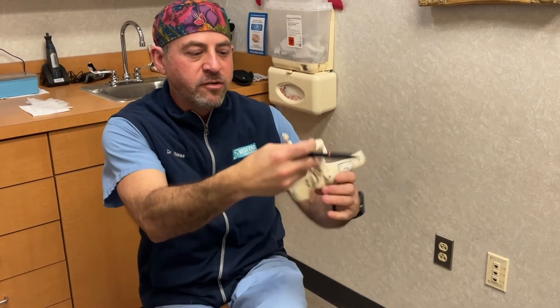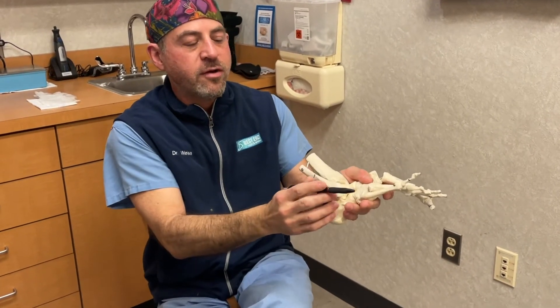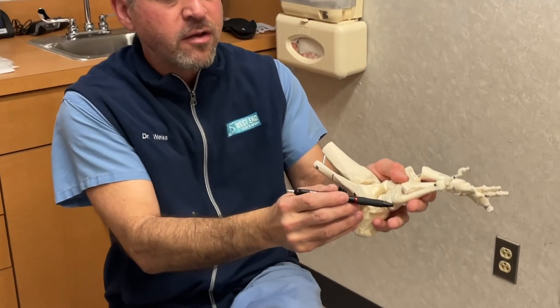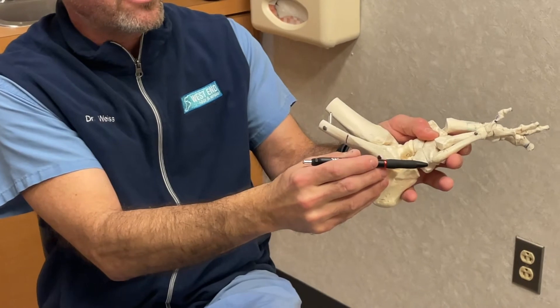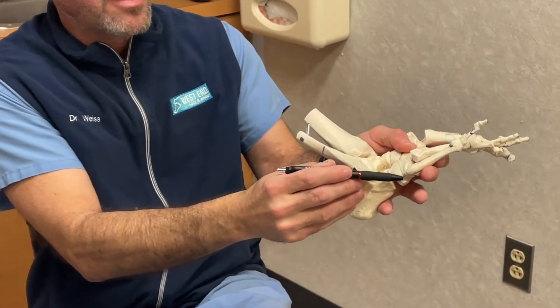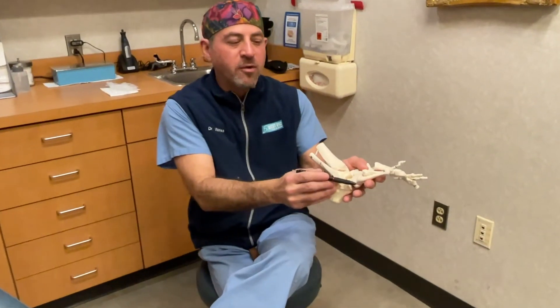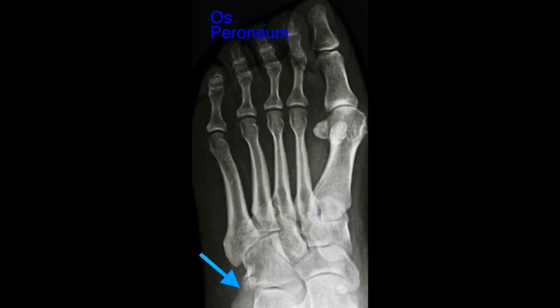The other one is on the other side. For patients who have pain to the outside of the foot, sometimes there's an extra bone right there and that is called an os peroneum, which is an extra bone typically within the peroneal tendons.